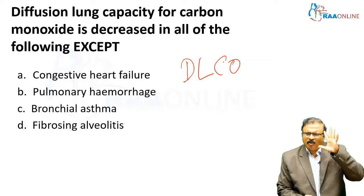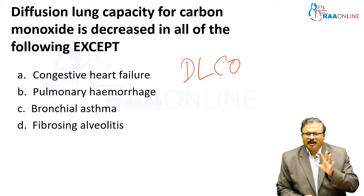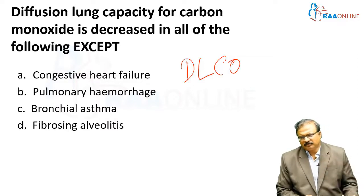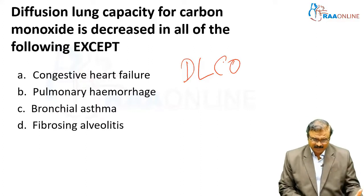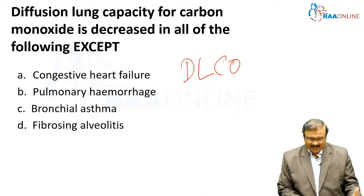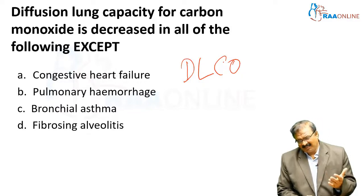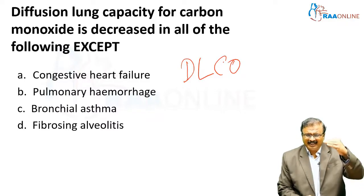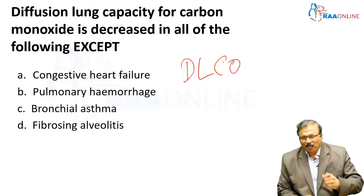Almost all conditions show decreased DLCO except when there is alveolar hemorrhage or pulmonary hemorrhage — hemosiderosis, where it is increased. Other conditions such as fibrosis, bronchial asthma, congestive cardiac failure, and interstitial lung disease will all produce decreased lung capacity for carbon monoxide.